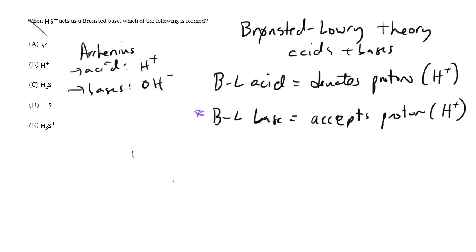If we write out the formula: HS minus takes an H+ and becomes H2S. Looking at the choices, that's choice C, because it's accepting that proton, that H+, and it joins up with it to give H2S. So the answer is C.